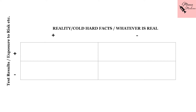Now, to understand what type of information goes in which column or row, let's move on. The plus and minus sign on top of the column represents the reality, the cold hard facts, or whatever is real. It may denote the standard values or the standard test against which we are comparing our measured values. It can also denote if the patient has the disease or not. It is not necessary that these boxes have numerical values — they can even have a yes or no, or simply plus or minus.